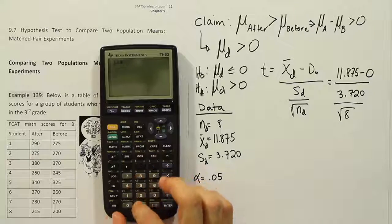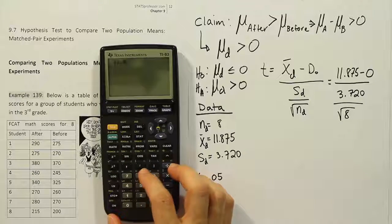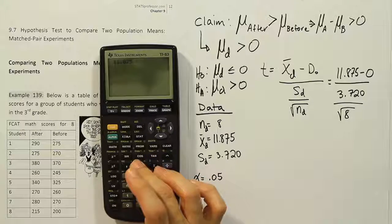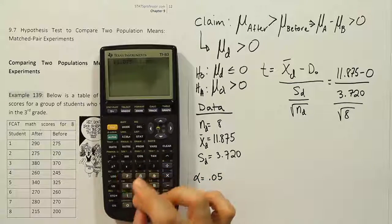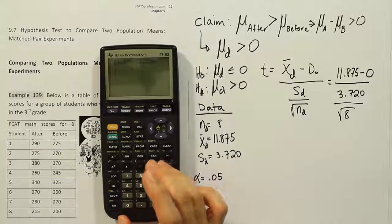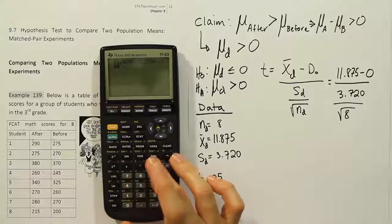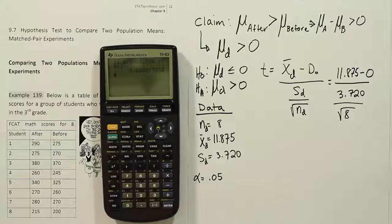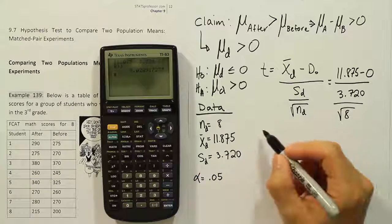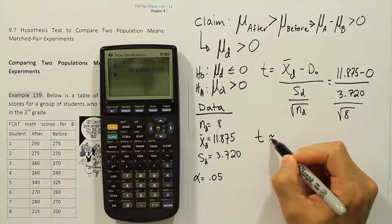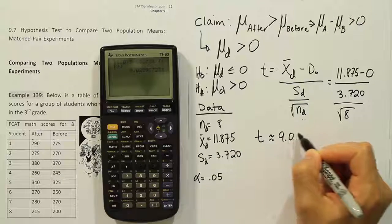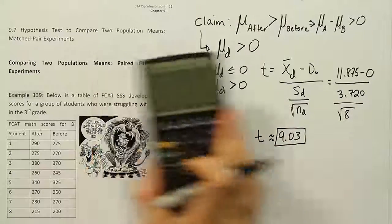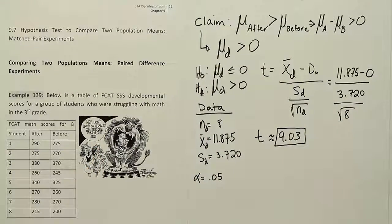Plugging those numbers into the calculator: the numerator is just 11.875, divided by 3.720 divided by the square root of 8. That gives us a t test statistic of approximately 9.03. That is pretty extreme, and it means there is going to be a significant difference for this procedure.